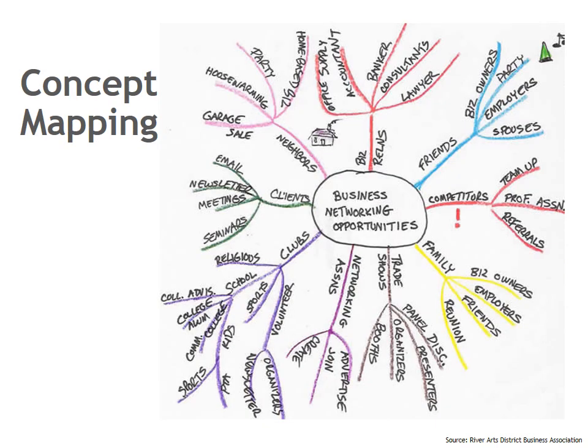Another brainstorming technique is concept mapping. In concept mapping, you think of a topic, say, business networking opportunities, and write it down in the middle of a piece of paper. Then use lines to indicate more specific ideas that would extend from that central topic. This technique will help get the creative juices flowing and allow you to visualize some of the different directions that you might take that topic.